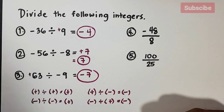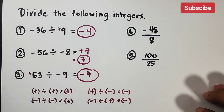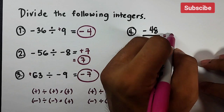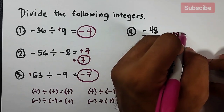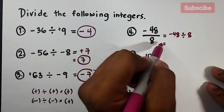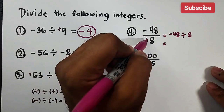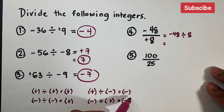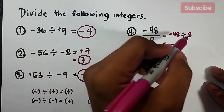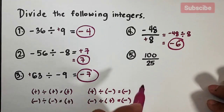Now item number four is a different form of division. Negative 48 divided by eight is also written as the fraction negative 48 over eight — don't be confused. As you can see, 48 in the numerator is negative and eight in the denominator is positive — different signs — so the quotient is negative. 48 divided by eight equals six, so the answer for number four is negative six.